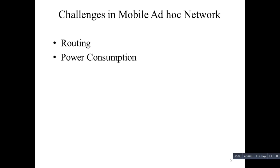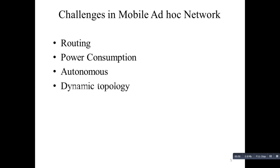Power Consumption: For most mobile terminals, communication-related functions should be optimized for power consumption. Conservation of power and power-aware routing must be taken into consideration. Autonomous: No centralized administration entity is available to manage the operation of different mobile nodes. Dynamic Topology: Nodes are mobile and can be connected dynamically in an arbitrary manner; links of the network may vary over time based on proximity of one node to another. Limited Resources: Mobile nodes rely on battery power, which is a scarce resource, and their storage capacity and power are severely limited.